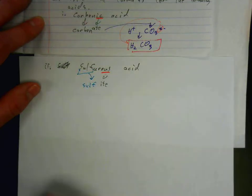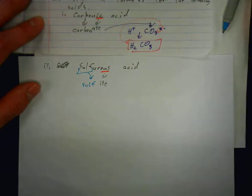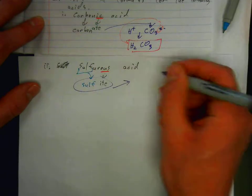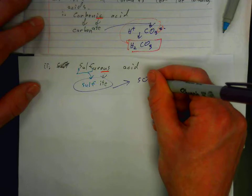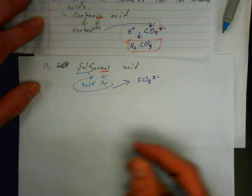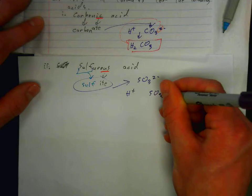We see that we have sulfite. So sulfite, its formula, is SO3 2-. And so now we just need to combine hydrogen with SO3. Criss-cross H2SO3.